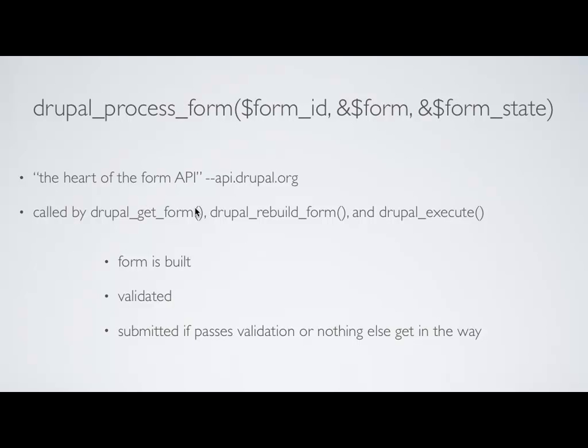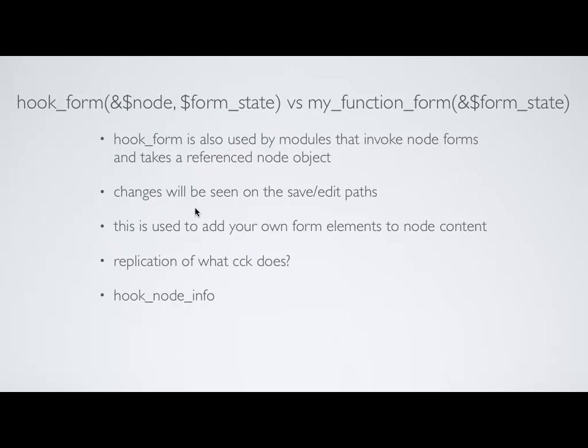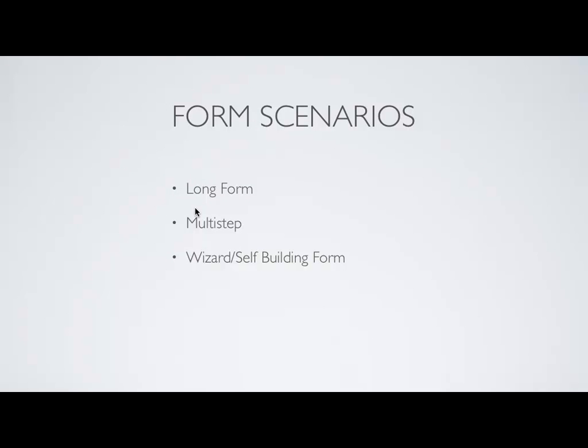We already covered process_form. Hook_form is the hook that builds the form and charges the array with all of the things you want to do. You can use CCK for a lot of this on your nodes, but I want to stress: this is for custom form building. Form scenarios: long form, multi-step form, and the wizard self-building form.